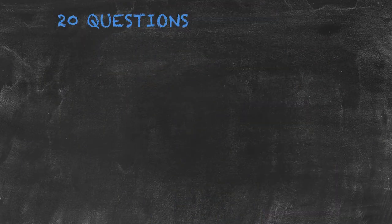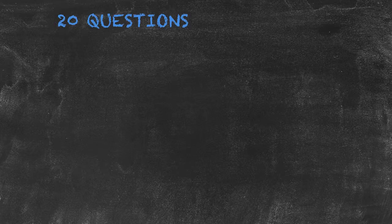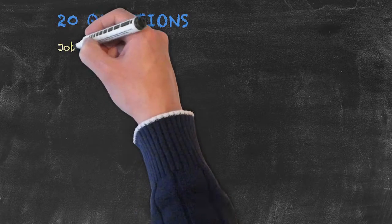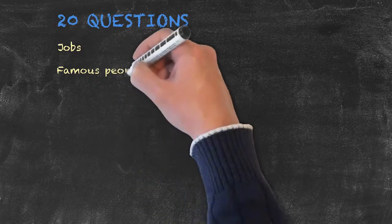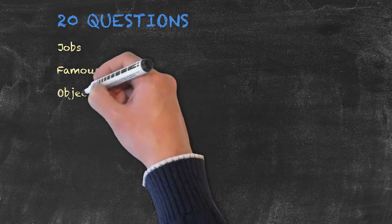Another idea for the present simple tense would be the classic 20 questions. The teacher could frame this into the context of what's my job, who am I, or even what am I for objects.